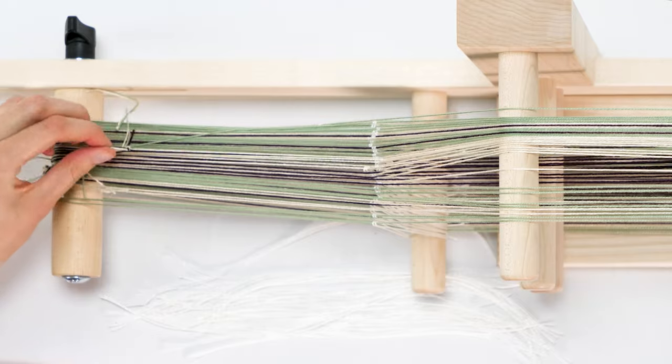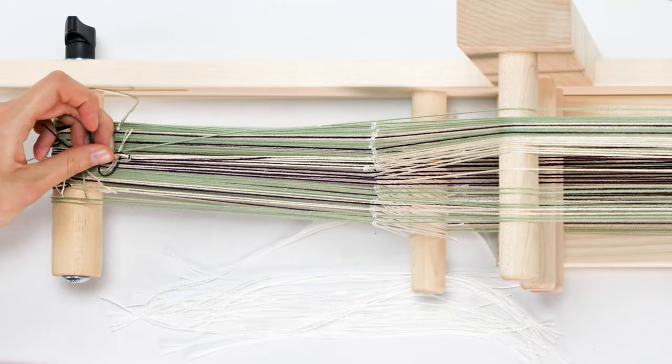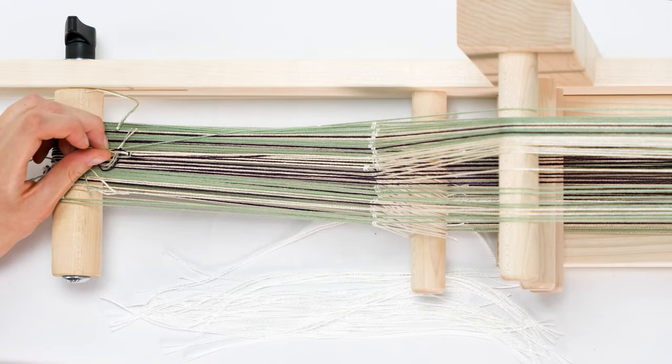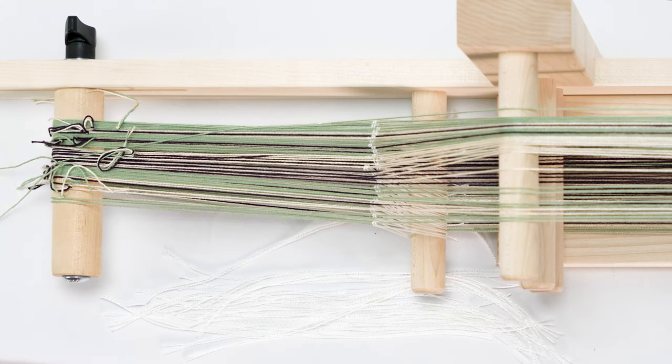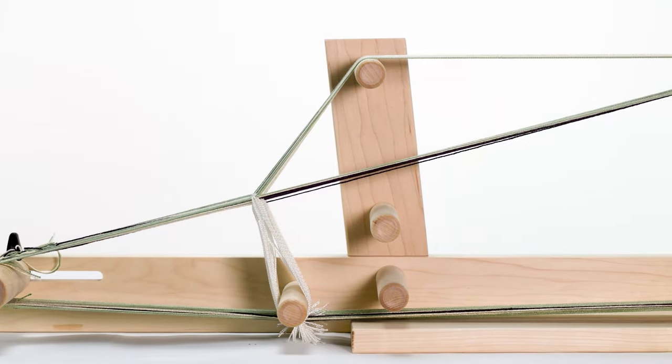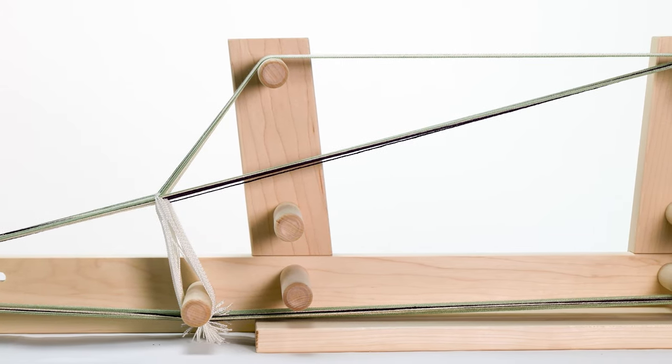The two ends will create a diagonal across the warp threads, which looks scary, but it will not affect your weaving at all. Once you get a few picks woven, you'll forget it was even there. Your loom is now warped and ready to begin weaving on.